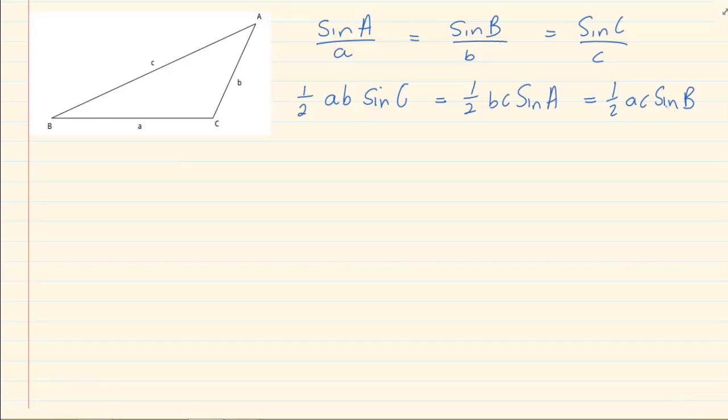So if they ask you for the proof of the sin rule, then we don't have to reprove that. All we have to do is start by saying half AB sin C is equal to this, which is equal to this, which is equal to this. Now what we do is we divide the entire thing by half ABC. And what we do to one, we do to all.